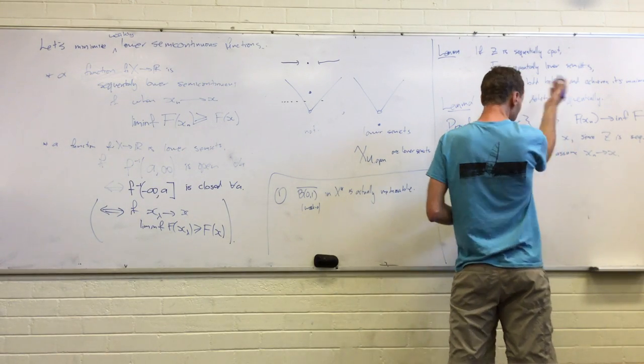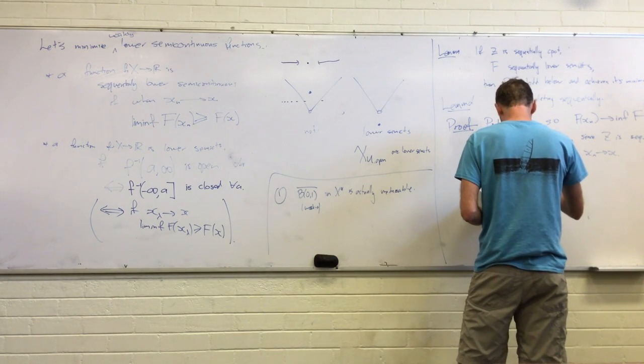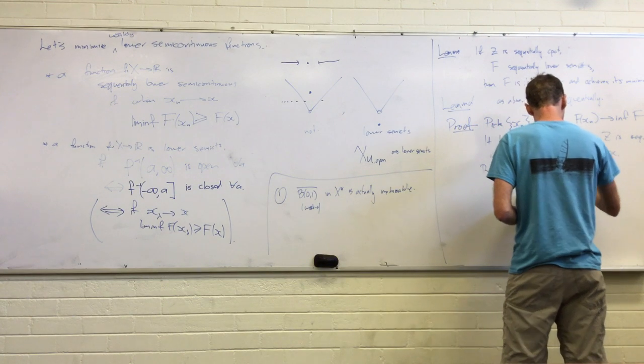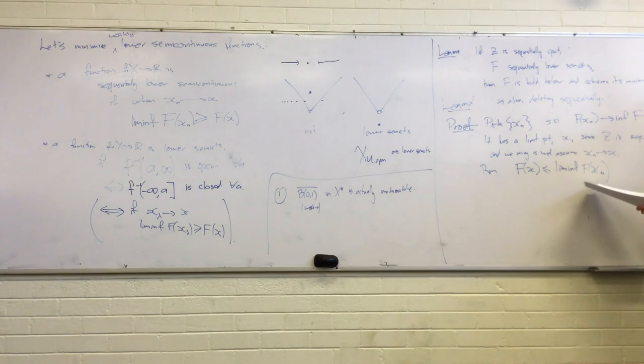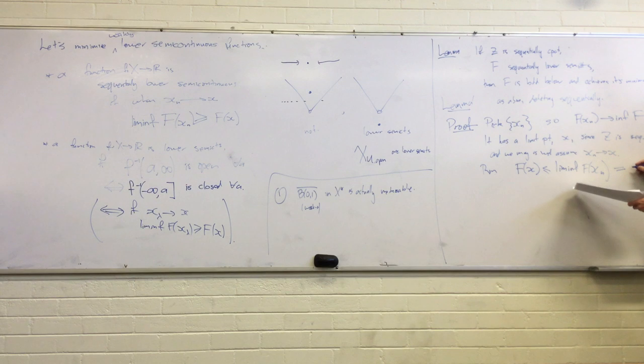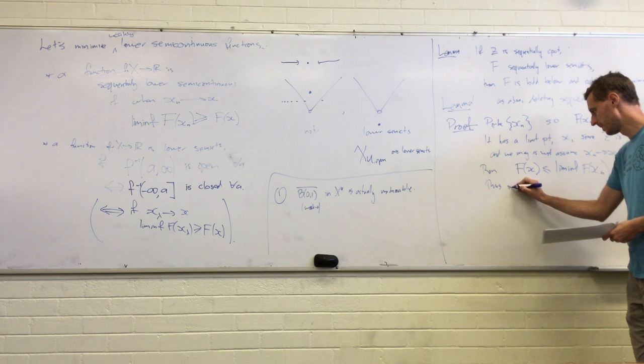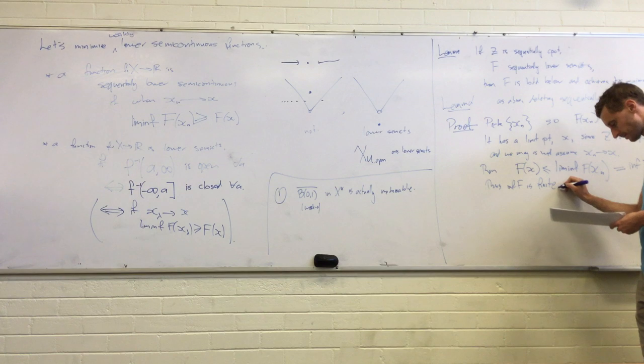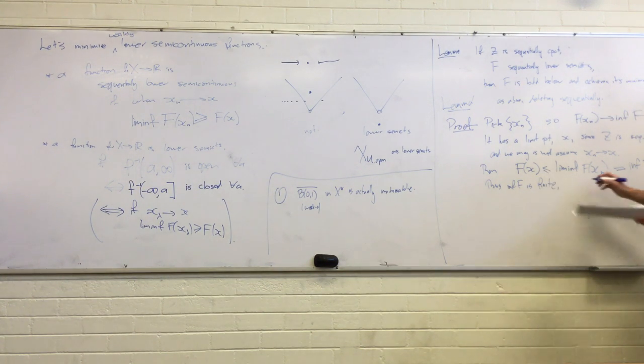But then it's pretty easy. Then just the definition of sequential lower semi-continuity just says that f(x) is less than or equal to lim inf f(xn). But we designed those so that the f(xn) converge. So that's just the limit. And so that's just inf f. So in particular, what did that do? That gave us that f was bounded below. f is bigger than f at some particular point. So that was some finite number. So f can't be negative infinity. And clearly f(x) equals inf f.